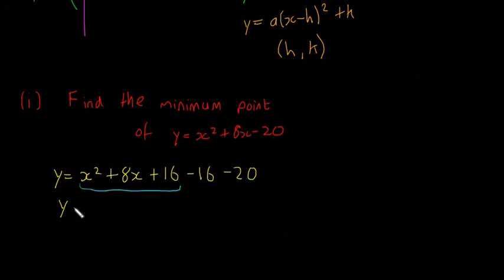Now we can complete this square because it's a perfect square. I'll turn it back into yellow. y equals... this is going to be x plus 4 squared, and then minus 16 minus 20 is going to be minus 36.